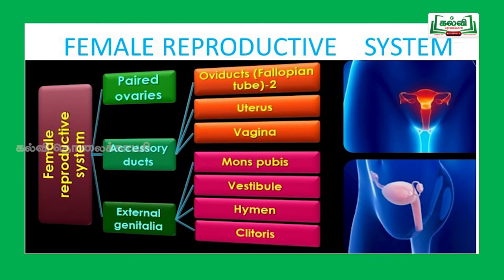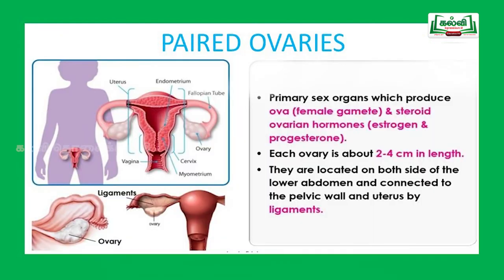Now we will move on to the female reproductive system. The female reproductive system consists of paired ovaries, accessory ducts, and external genitalia. There is a single uterus, a single vagina, and paired oviducts or fallopian tubes. The external genitalia are mons pubis, vestibule, hymen, and clitoris.